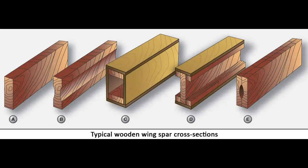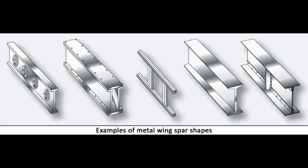Most wing spars are basically rectangular in shape, with the long dimension of the cross section oriented up and down in the wing. Currently, most manufactured aircraft have wing spars made of solid extruded aluminum or aluminum extrusions riveted together to form the spar. In an eye beam spar, the top and bottom are called the caps and the vertical section is called the web. The entire spar can be extruded from one piece of metal or built up from multiple extrusions. The web forms the principal depth portion of the spar, and the cap strips are attached to it. Together these members carry the loads caused by wing bending, with the caps providing a foundation for attaching the skin.